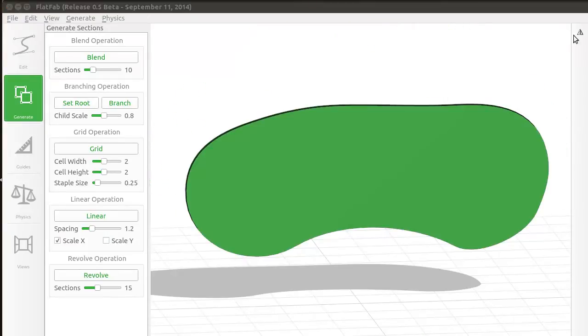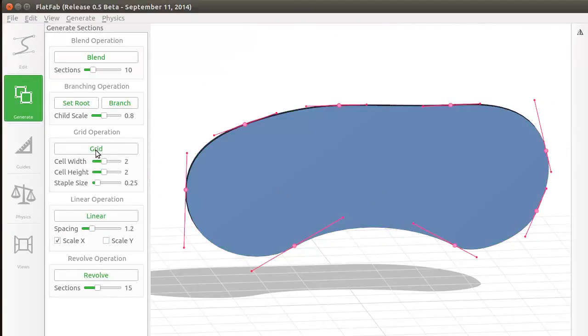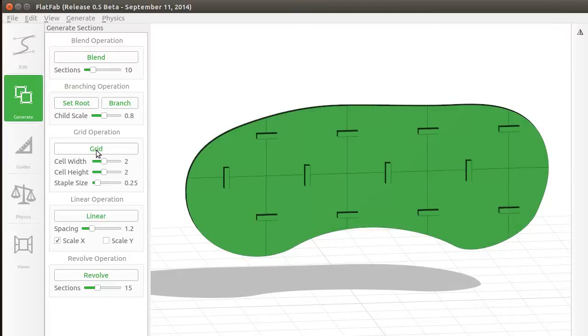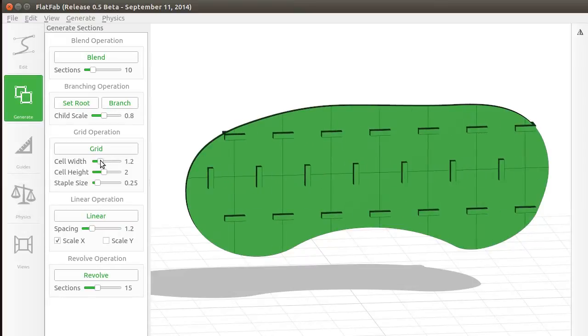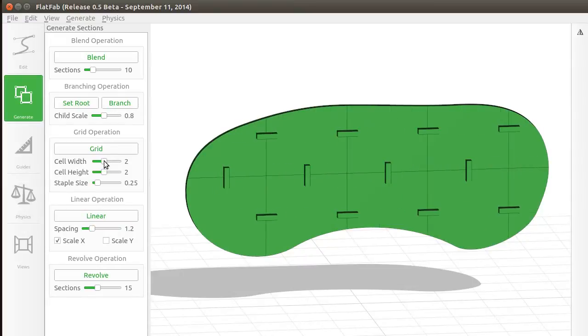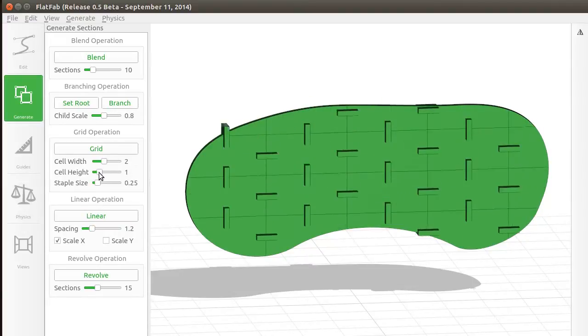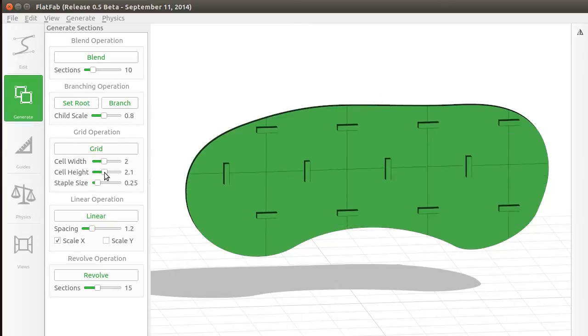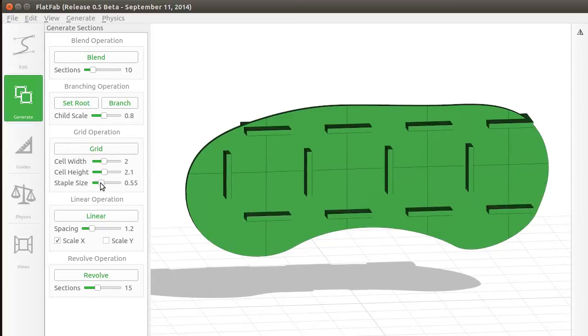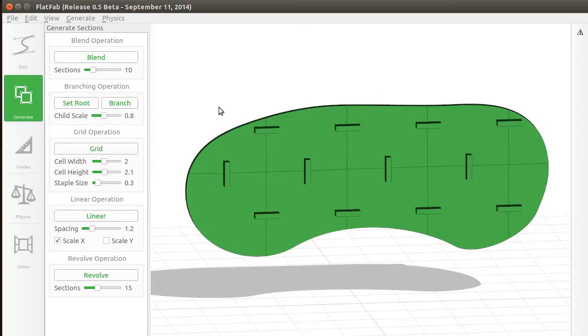A large planar section may have dimensions which exceed those of the material to be used for fabrication. In this case the grid operation can be used to partition a large planar section into smaller sections. Small planar sections which act as links are added to connect the adjacent sections automatically.